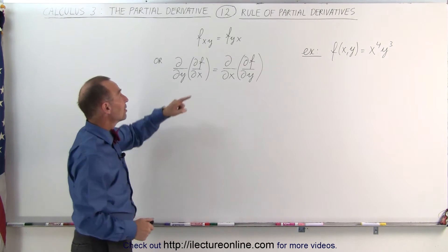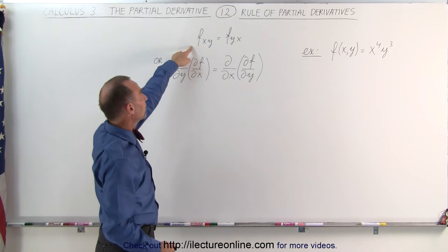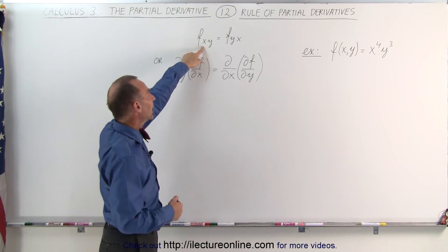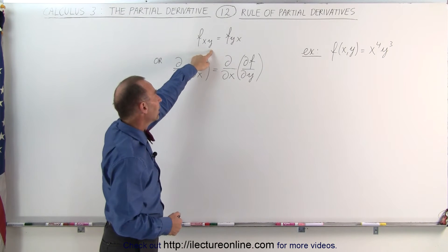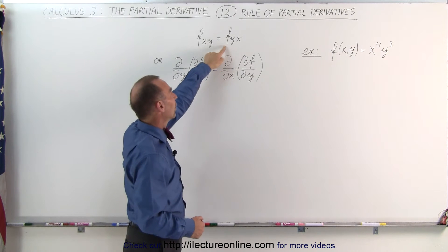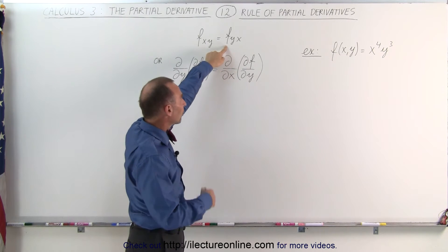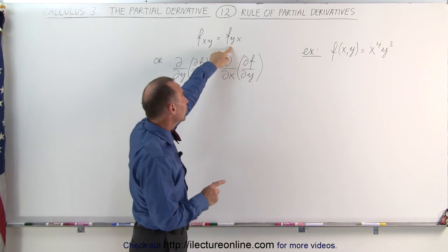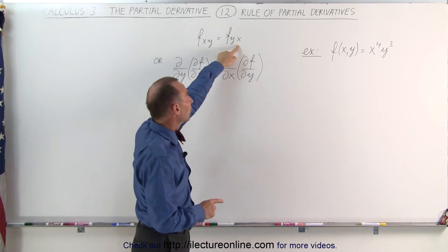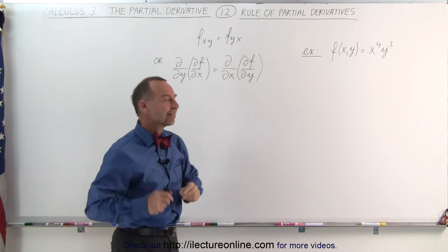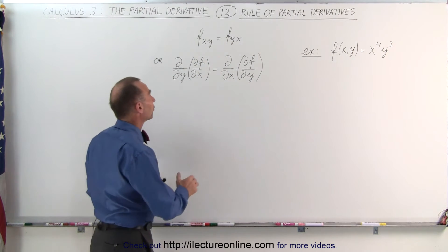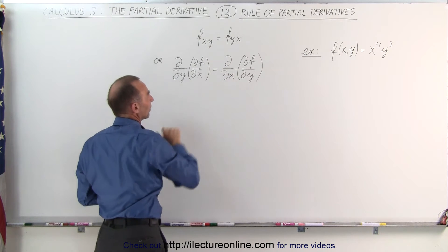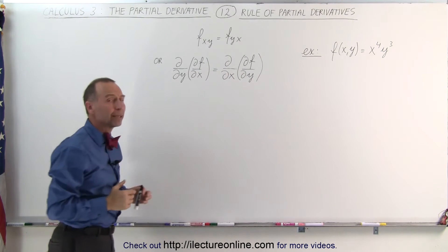For example, if you take the partial derivative of the function first with respect to x, and then you do it again with respect to y, or you take the partial derivative of the function with respect to y first, and then you do it again with respect to x, you get the exact same result. This was that short notation, or you can write it like this — same thing.